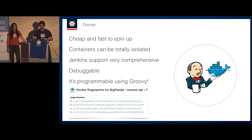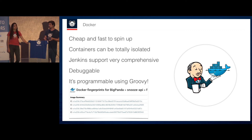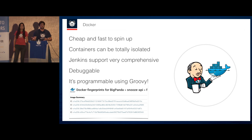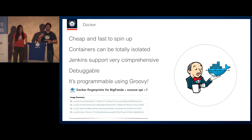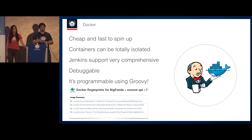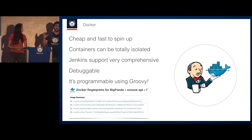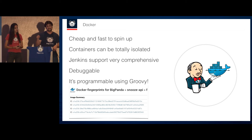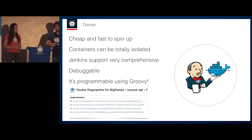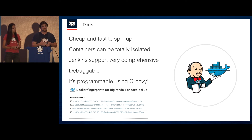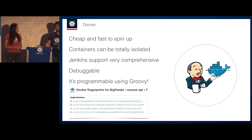Docker is cheap on resources and really fast to spin up containers. Docker Hub has images for almost everything we needed, covering almost all our infrastructure needs, and whatever we needed more we built ourselves. The Jenkins Docker support is extremely comprehensive, debuggable, and easy — it adds a fingerprint of the Docker image IDs used in each specific run, so you know exactly which images were used. And best of all, it's programmable using Groovy, so we can use our Groovy shared library to manage Docker however we want.